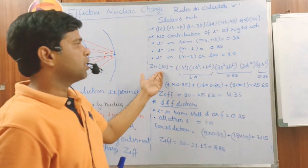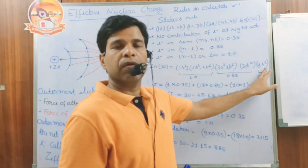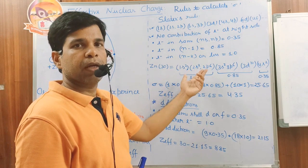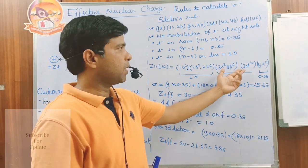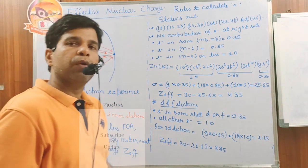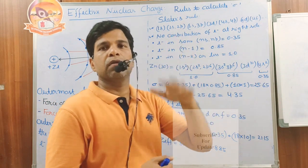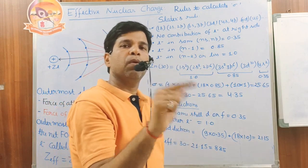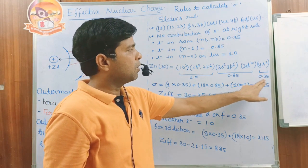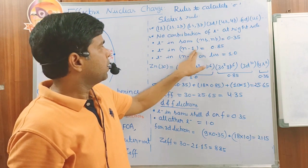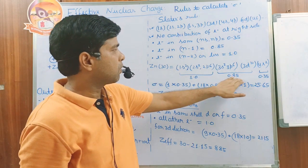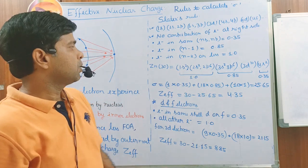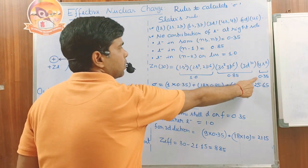Suppose we want to calculate the effective nuclear charge for the 4s electron of zinc. First, we write the electronic configuration in Slater's notation: (1s²), (2s² 2p⁶), (3s² 3p⁶), (3d¹⁰), (4s²). To calculate the Sigma value for one of the 4s electrons, the one remaining 4s electron in the same outermost shell contributes 0.35. All electrons in the (n-1) shell contribute 0.85.